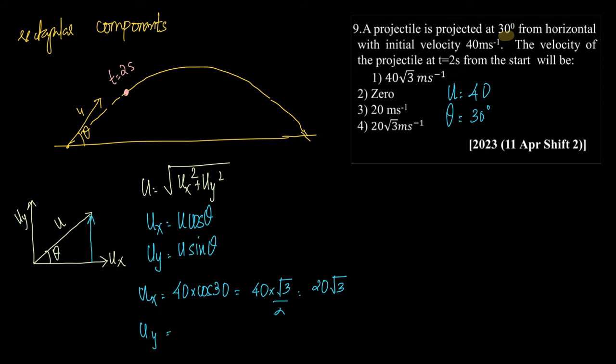Next, what we have is uy, which is u sin theta. u is 40 into sin theta is sin 30, therefore it is 40 into 1 by 2 which is 20.